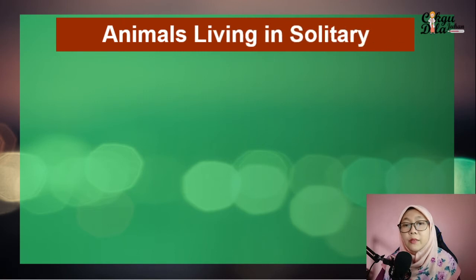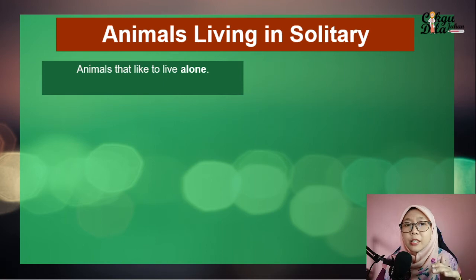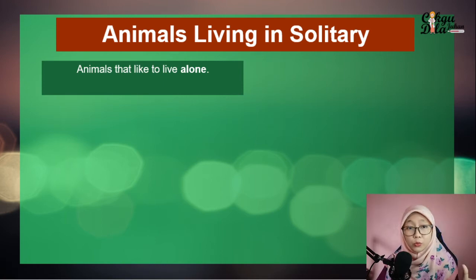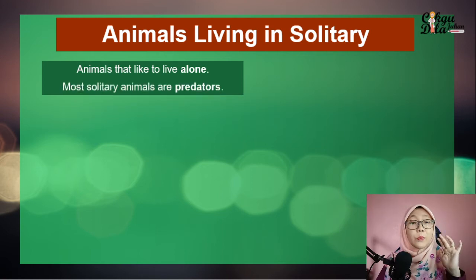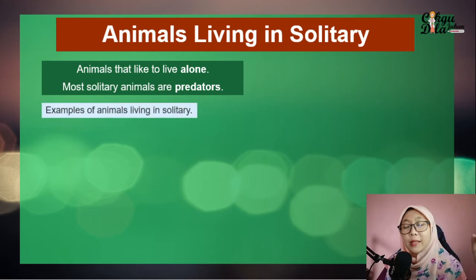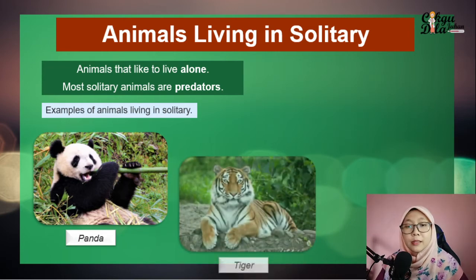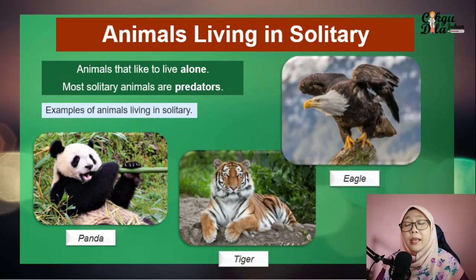Next, we move to animals that live in solitary — that means they live alone. Most solitary animals are predators; they are not producers or first consumers. Examples of animals that live in solitary include panda, tiger, and eagle.